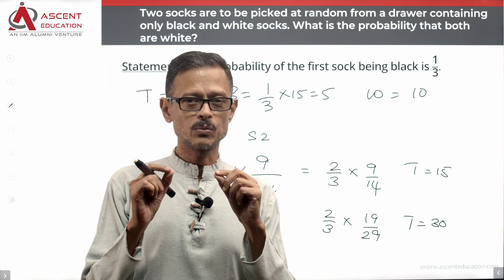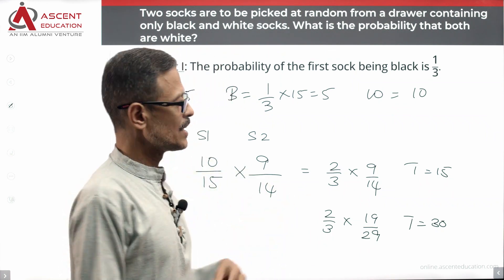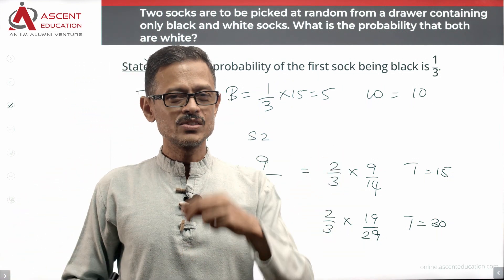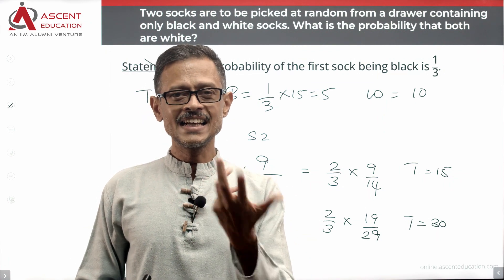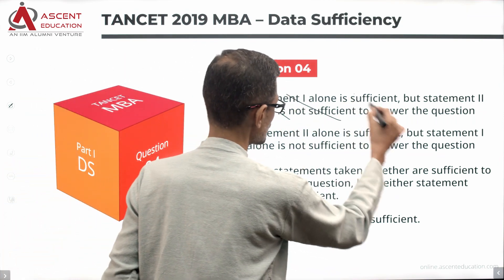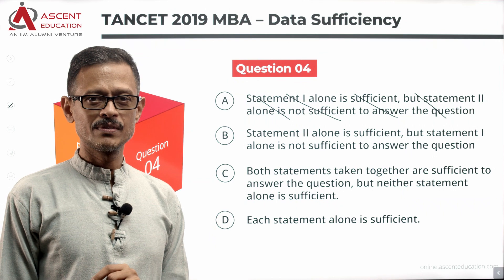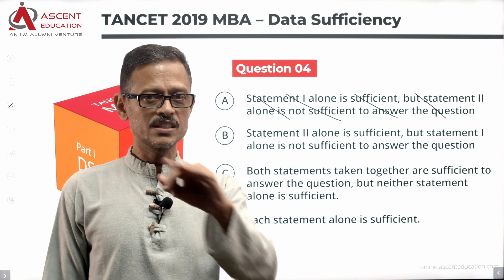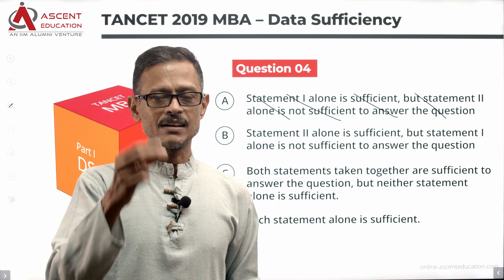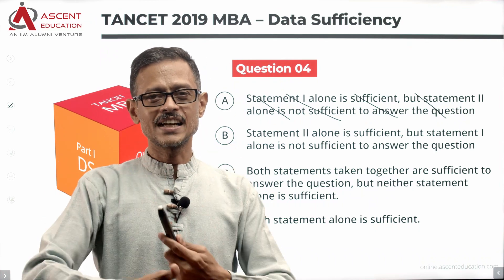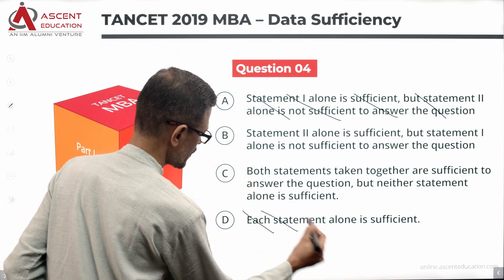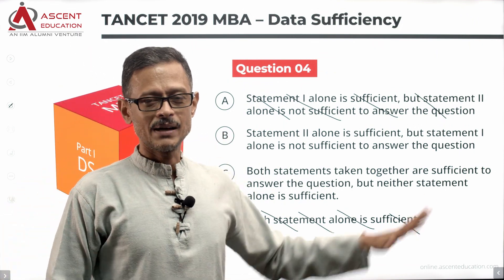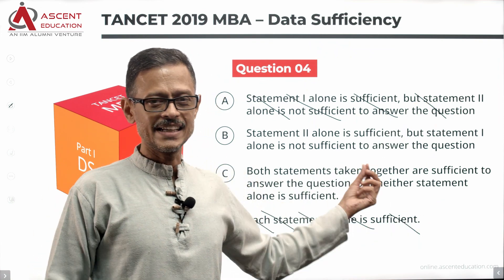With the information given in statement 1, we do not get a unique answer — we get more than one answer. So statement 1 alone is not sufficient. This means we can eliminate answer options A and D, since both require statement 1 to be sufficient.